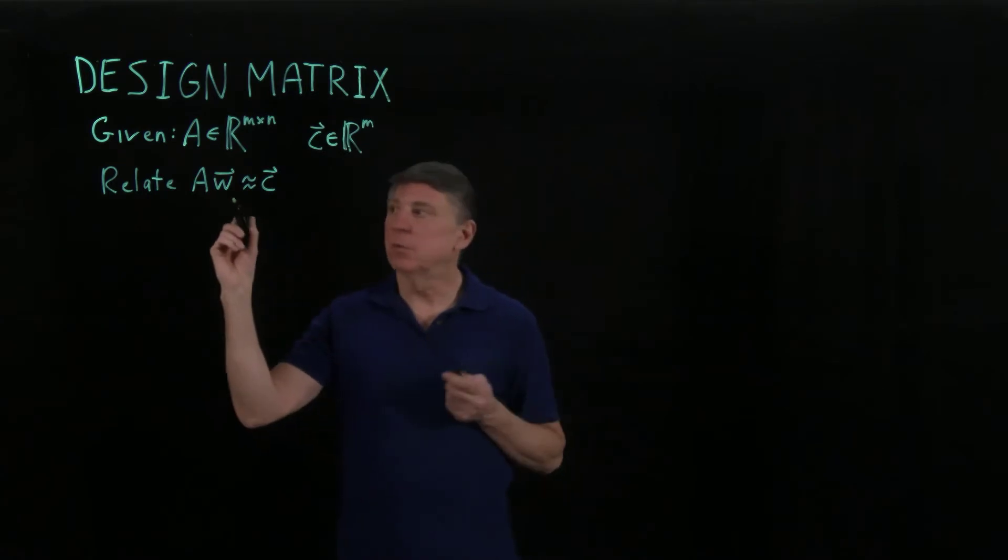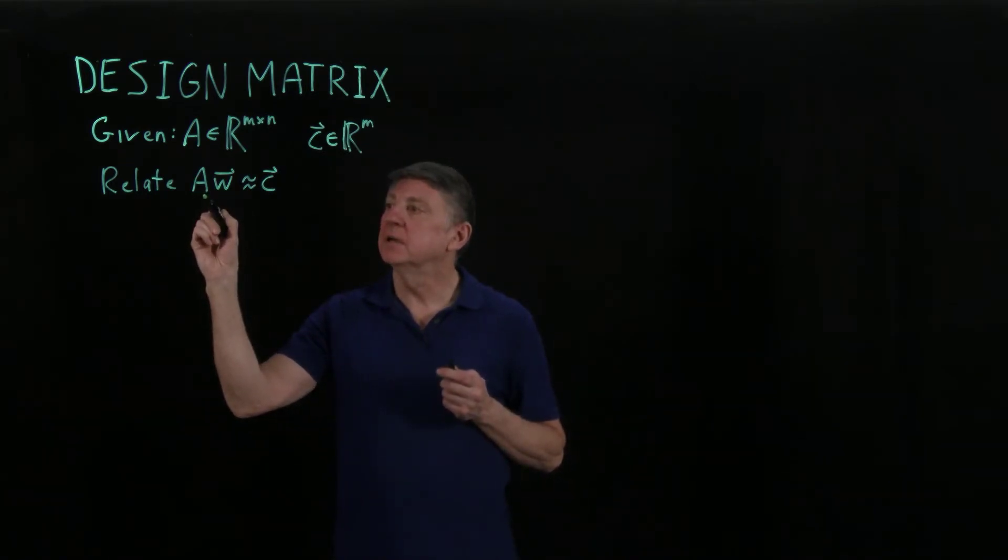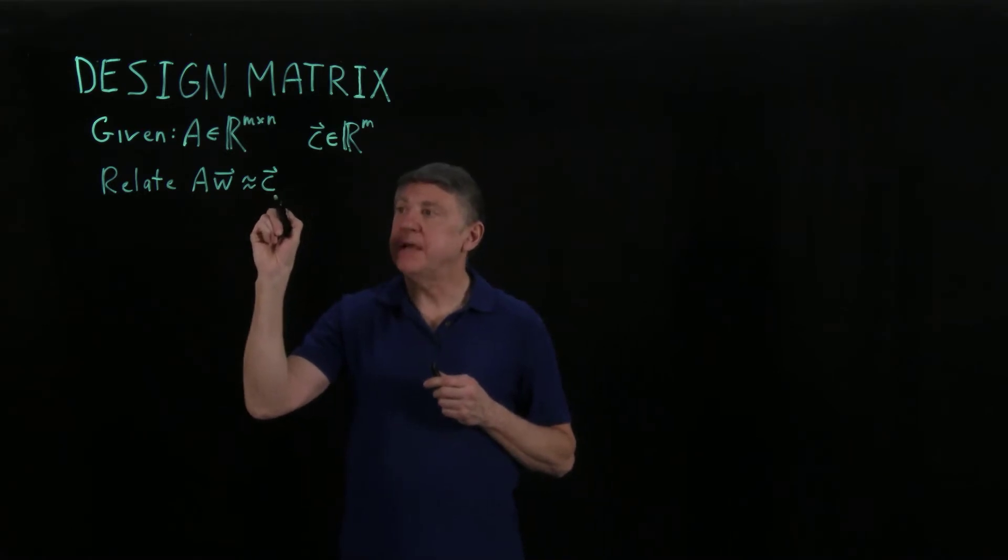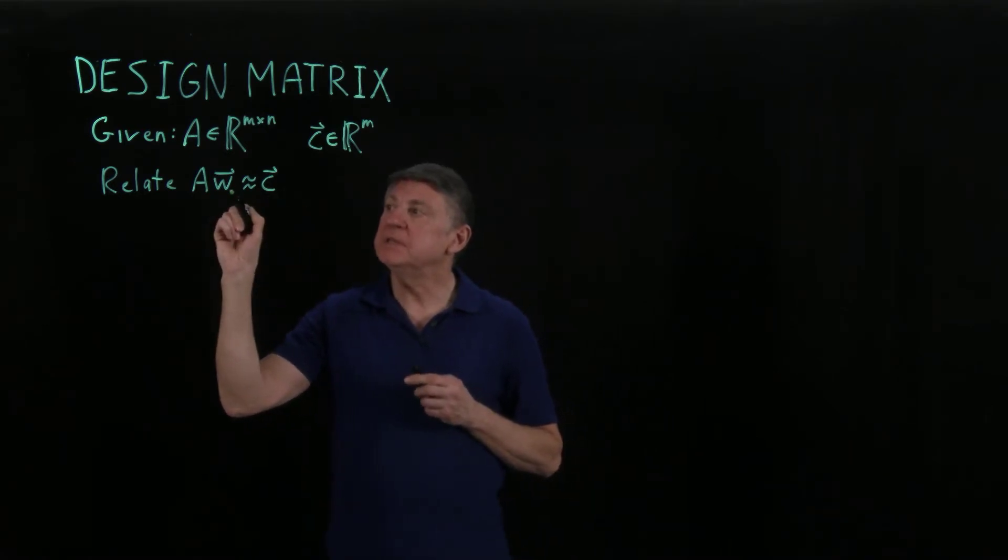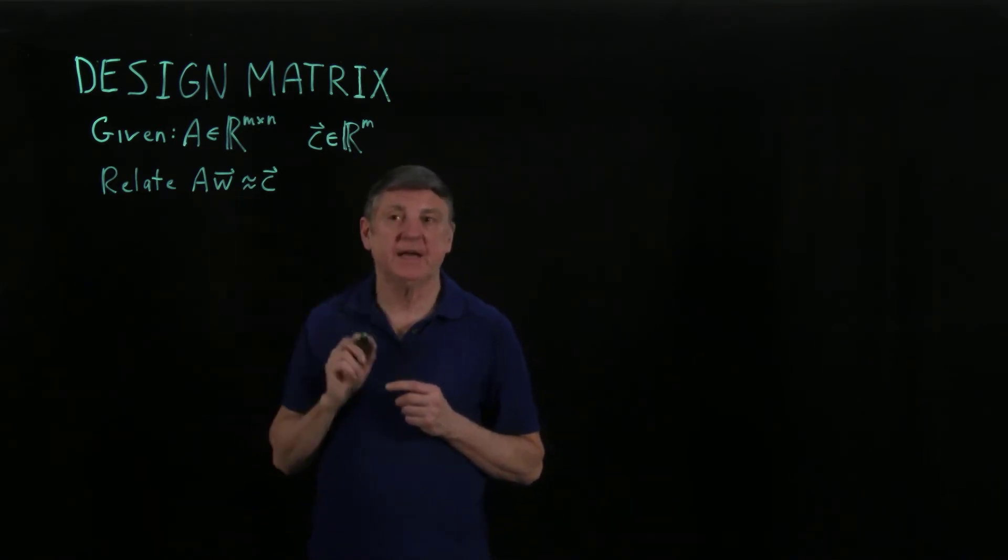What we want to do is relate the data in the independent data matrix to the dependent data by means of a weight vector, and what we need to do is try to get at that.